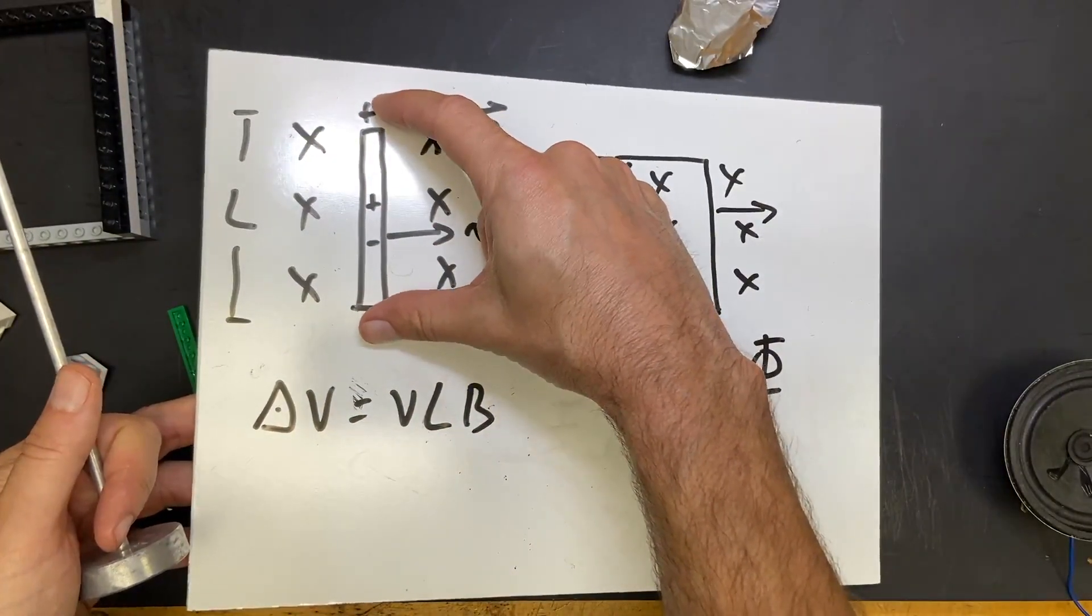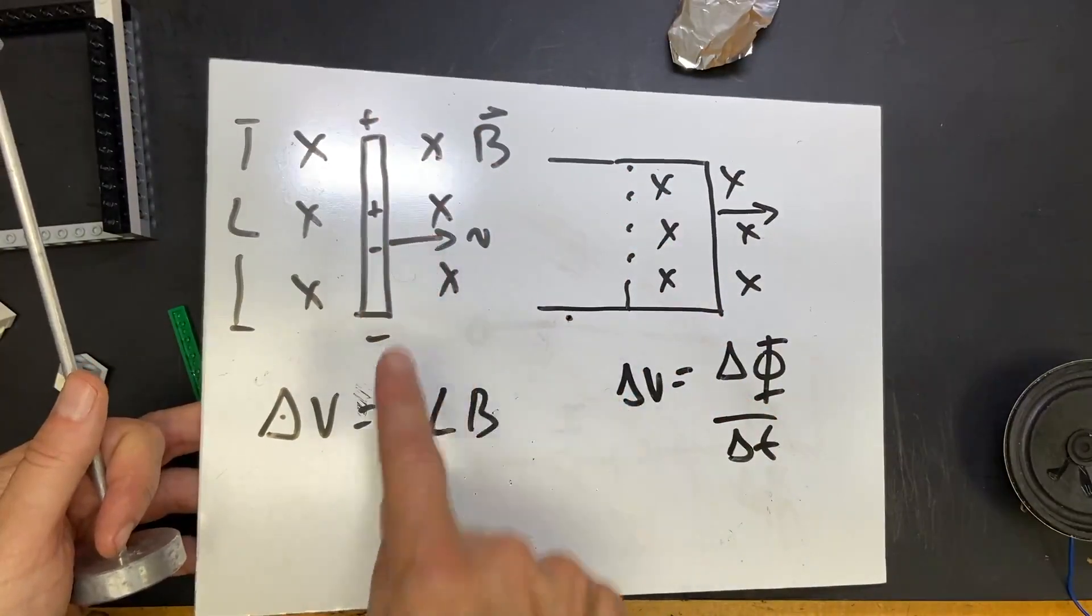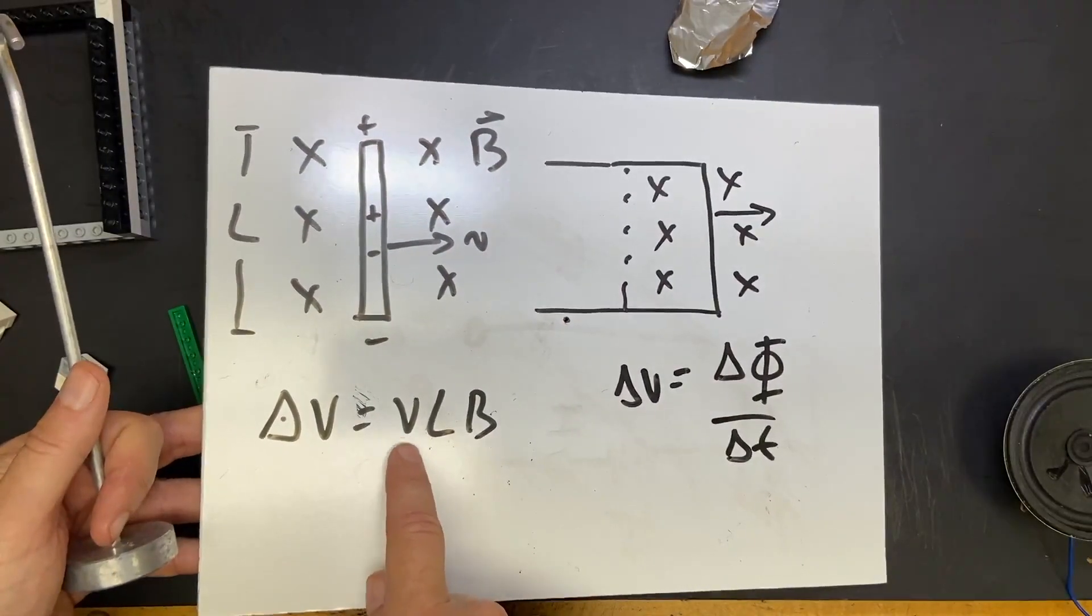Now I have a potential difference, I have charge difference, so I have a voltage. So the voltage on here depends on the length of the wire, the magnetic field, and the velocity, and that's the key.